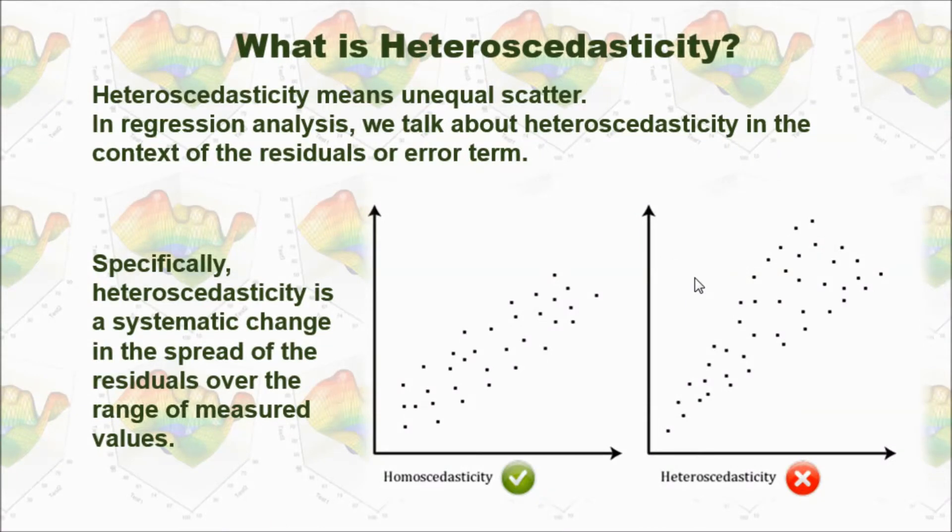Let's think about this example. The travel expense versus family income. When the family income increases, the variety of the travel expense will also increase. That shows heteroscedasticity.